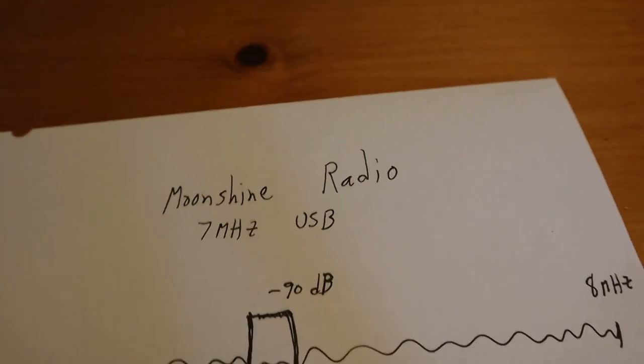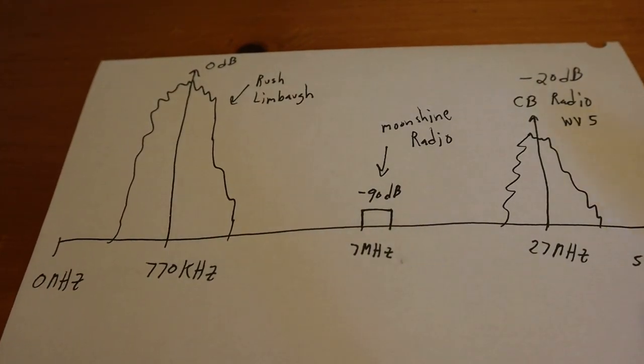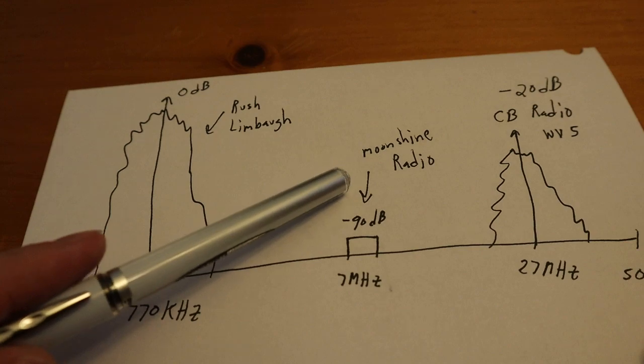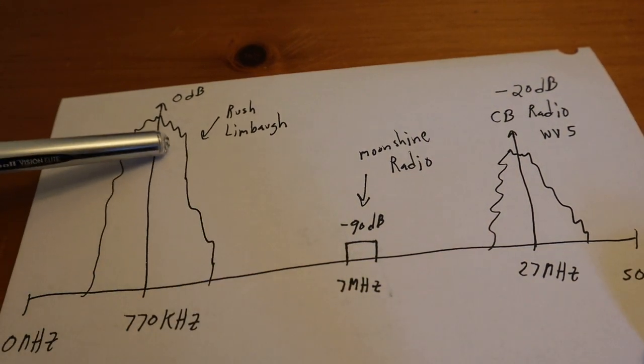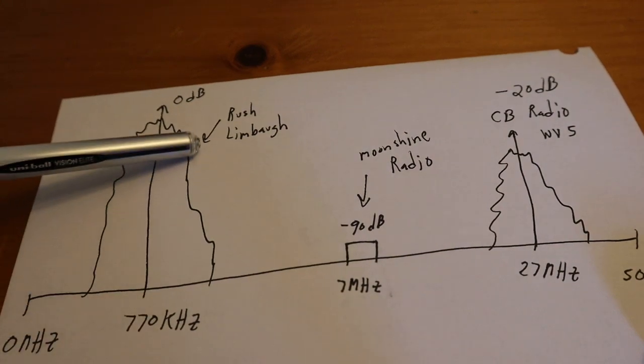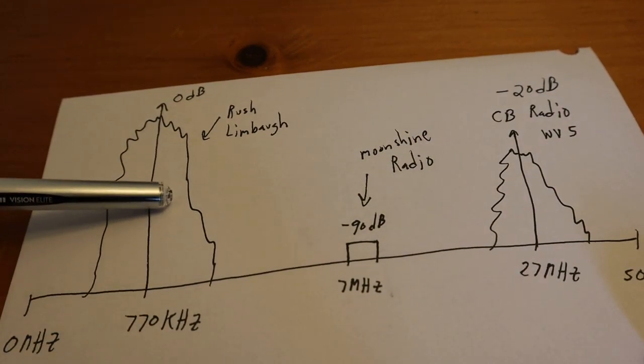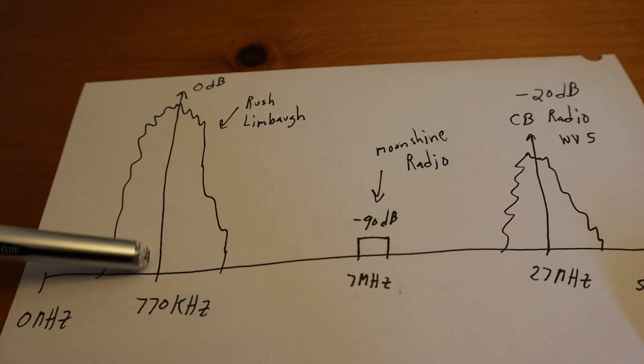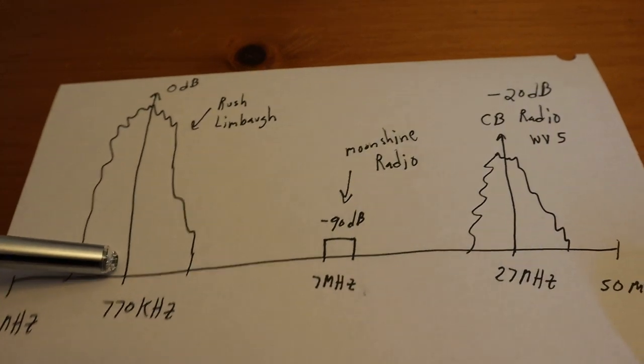Alright, so what the heck happened? Well, coming in that piece of wire that you threw out the window, ain't just the Moonshine radio station down here at 90 dB. It's also, we got this BAM Rush Limbaugh station way back here at 770 kilohertz. You know, you live right outside of New York City, so you're hearing this BAM signal coming into your antenna full strength.